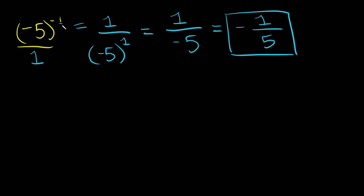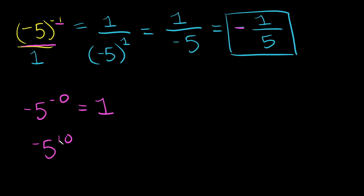Our answer is negative because we have an odd exponent with a negative base — and sure enough it was. Now here's one in case you have a mean teacher: negative 5 raised to the negative 0. Well, this is simply 1, because 0 isn't actually positive or negative. So writing negative 5 to the 0 doesn't put a positive sign there — it's just 0. Any number raised to the 0 power is just 1.